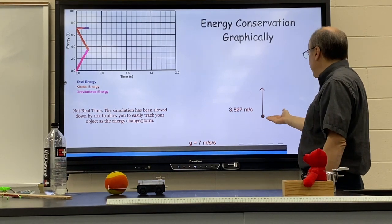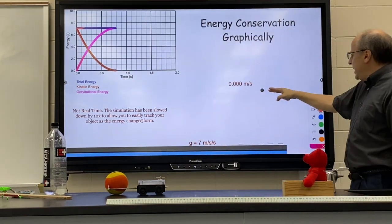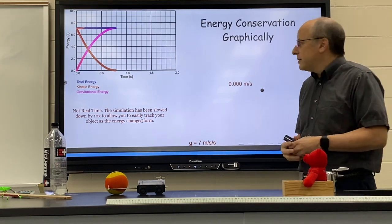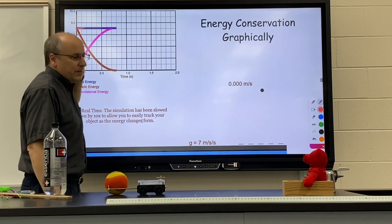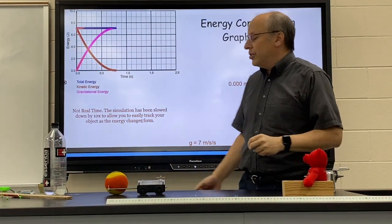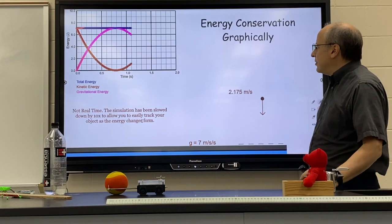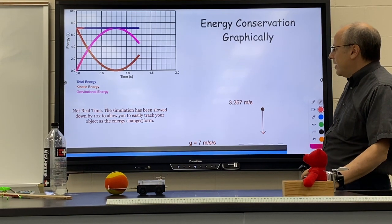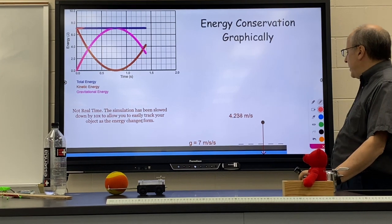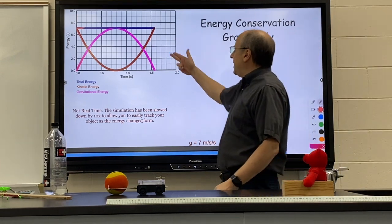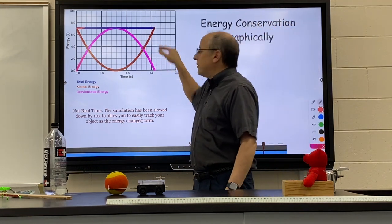As the ball continues upward, the potential energy continues to rise and the kinetic continues to fall. When we hit the highest point, the object temporarily stops — all the kinetic energy is gone and it's now all gravitational potential energy — and you can see the total has remained the same. Then gravity turns the situation around, converting that potential energy back into kinetic energy. We follow it all the way back down to the ground, where we get back to the same kinetic energy we started with, a potential energy of zero, and the total energy has not changed.